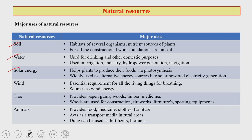The major natural resources available in our ecosystem include soil, water, solar energy, wind, trees, and animals, with their major uses shown on the right-hand side of this slide.